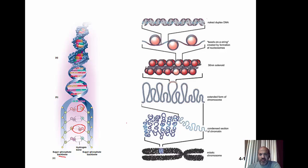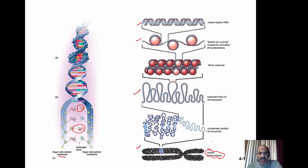Then we looked at how DNA is packaged into chromosomes, starting with the basic structure of DNA, then wrapping around histones to form nucleosomes, then zigzag folding, then irregular loops, and then with the help of other proteins, coiling further to finally form a visible chromosome during mitosis. That mitotic chromosome is visible only during mitosis.